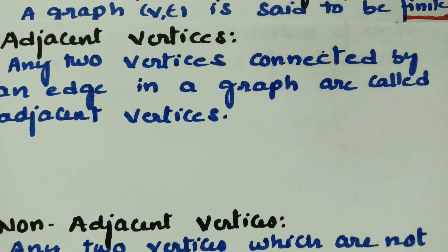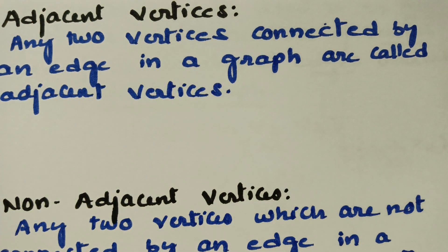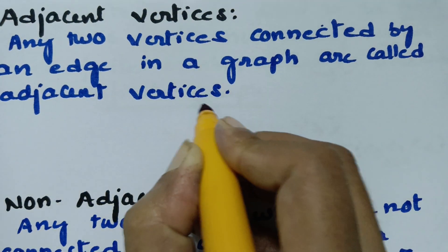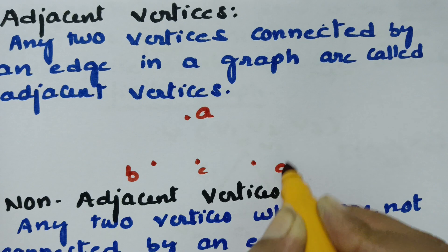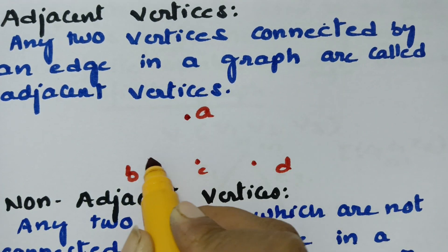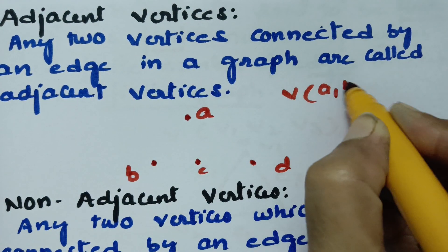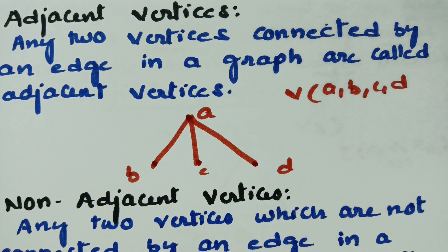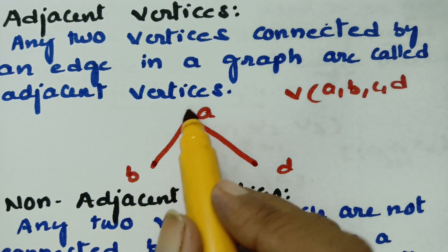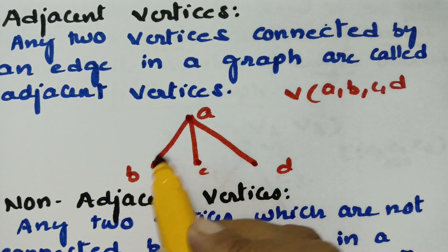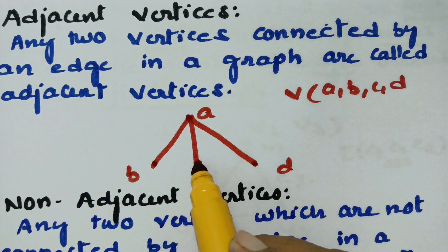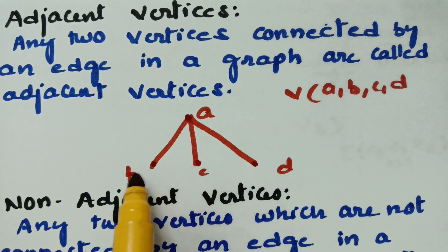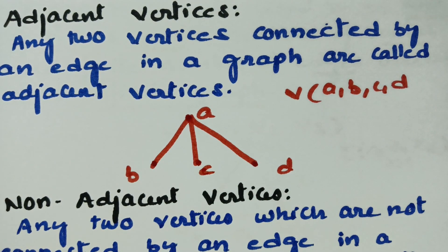Adjacent vertices: any two vertices connected by an edge in a graph are called adjacent vertices. For example, consider vertices A, B, C, and D. A and B are connected by an edge, so A and B are adjacent vertices. A and C are adjacent vertices. A and D are adjacent vertices. However, B is not connected to C by any edge, so B and C are non-adjacent vertices.